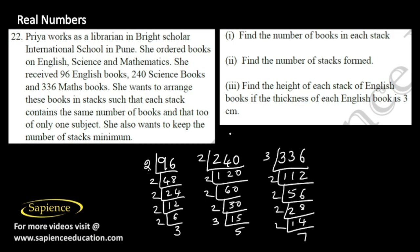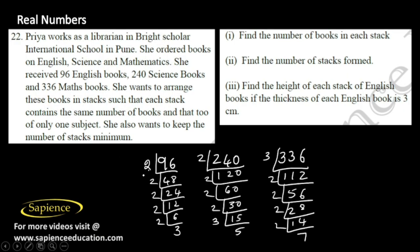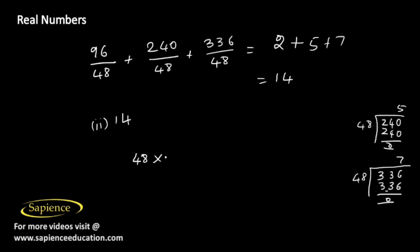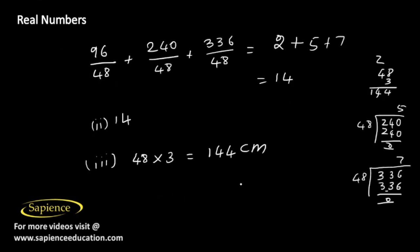Find the height of each stack of English books if the thickness of each English book is 3 cm. Each stack contains 48 books, so height equals 48 into 3 equals 144 cm. Summary: books per stack is 48, number of stacks is 14, and height of each English book stack is 144 cm.